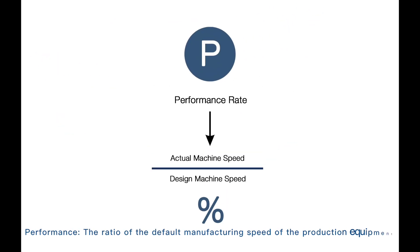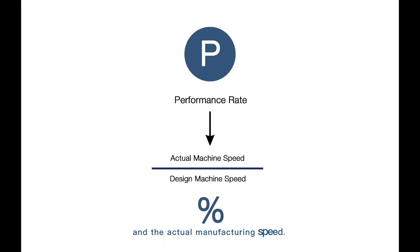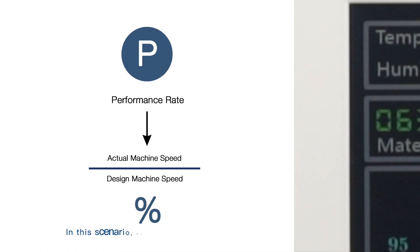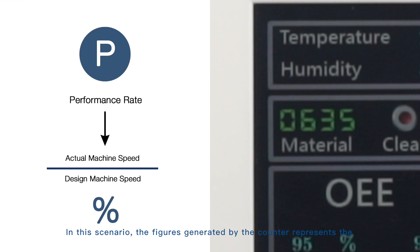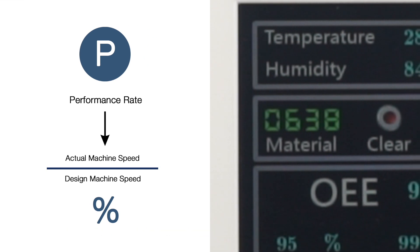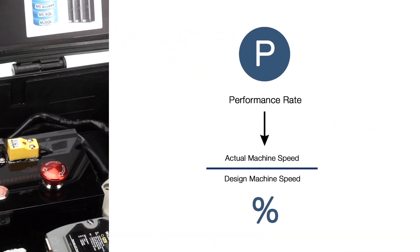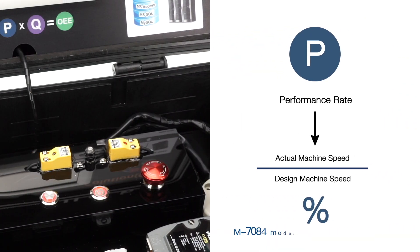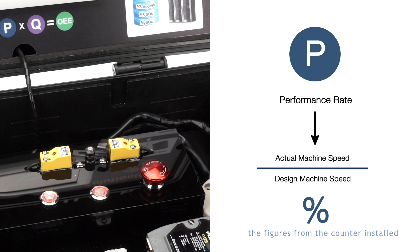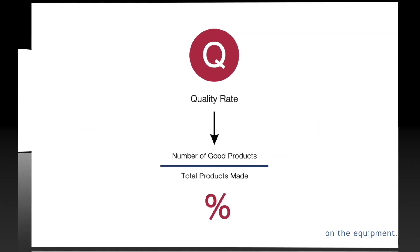P — Performance: the ratio of the default manufacturing speed of the production equipment to the actual manufacturing speed. It only indicates the speed of manufacturing, regardless of quality. In this scenario, the figures generated by the counter represent the number of products produced in the production line — each round represents one product being produced. The M7084 module is mainly for collecting figures from the counter installed on the equipment.